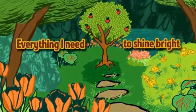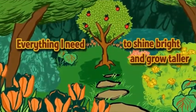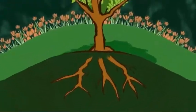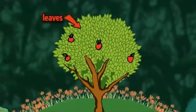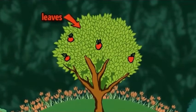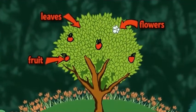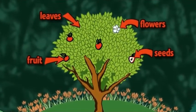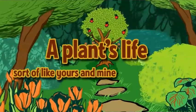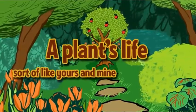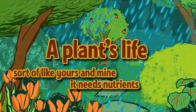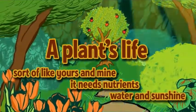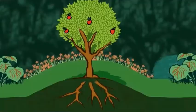Plants have roots, stems, leaves. Many have fruit, flowers, seeds. A plant's life is sort of like yours and mine. It needs nutrients, water, and sunshine.